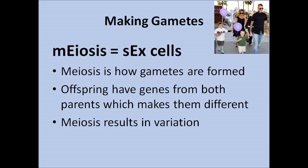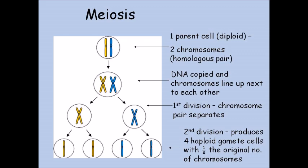Meiosis also results in variation, so it's very important. Starting with one diploid parent cell — and again I'm only showing two chromosomes — the first thing that happens is the same as mitosis: the DNA replicates and we end up with X-shaped chromosomes. But meiosis is different because we have two cell divisions. In the first division each X-shaped chromosome separates into two separate cells. In the second division the arms of those chromosomes — the chromatids — separate, giving us four different cells. So two cell divisions produce four gametes: four eggs if you're female or four sperm cells if you're male, and they are haploid because they contain half the genetic information of the starting cell.